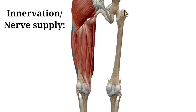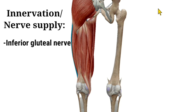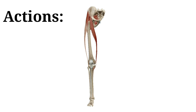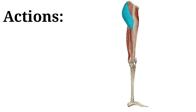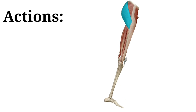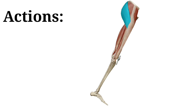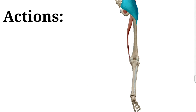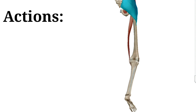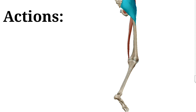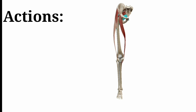The gluteus maximus muscle is innervated by the inferior gluteal nerve, which is a branch of the sacral plexus. About the action of the gluteus maximus: it causes extension of the hip joint from a flexed position, and it does lateral rotation at the hip joint.